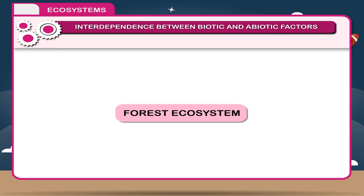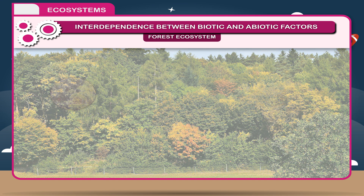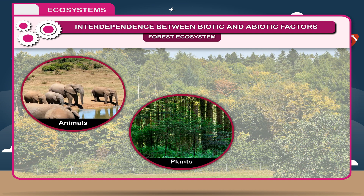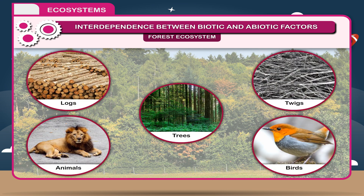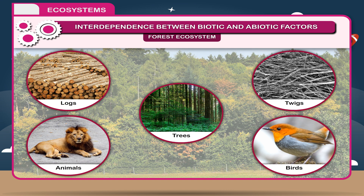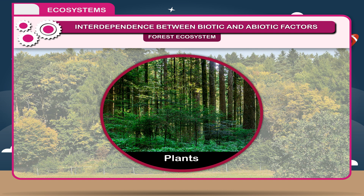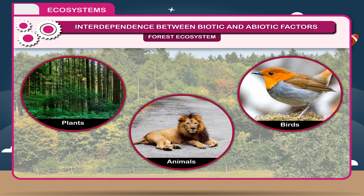Forest ecosystem. A forest ecosystem is a complete ecosystem which includes herbs, shrubs, trees, animals, plants, and decomposers or microorganisms. Dead things such as logs, twigs, trees, animals, birds, rocks, water, and soil are also part of the ecosystem. Plants are producers while animals and birds are consumers.